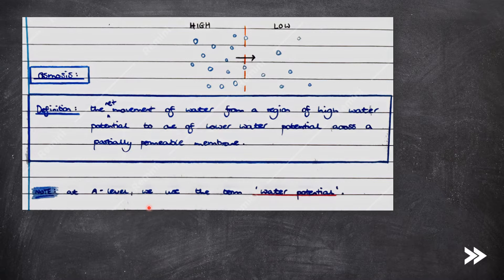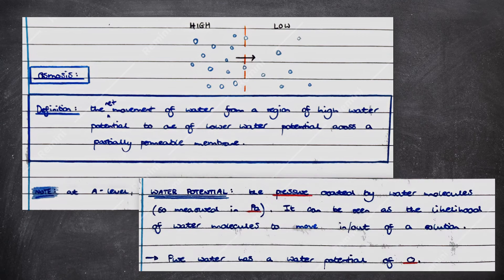Next we have osmosis, which is the net movement of water from a region of high water potential to one of lower water potential across a partially permeable membrane. Note that at A-level, as opposed to GCSE, we use the term water potential. Water potential is the pressure created by water molecules, so it's measured in a unit of pressure such as pascals. It can be seen as the likelihood of water molecules to move in or out of a solution.